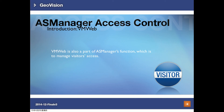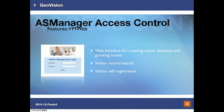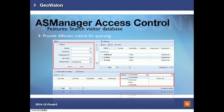The last feature is VMWeb, accessible via browser, used to manage visitor access. It allows you to create a visitor database, grant access when a visitor requests permission, and perform visitor record searches. The visitor database UI lets you filter by company name, employee ID, and other fields, and you can edit or delete visitor records.